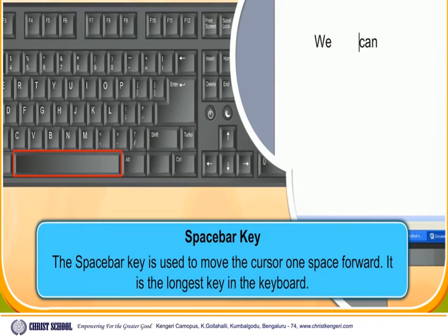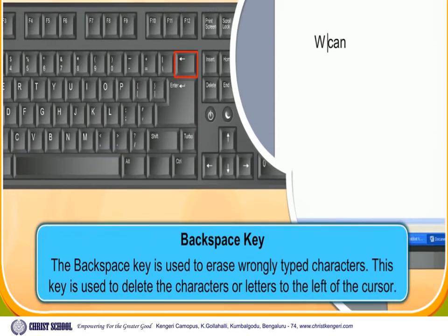Can you see the space between two words? Backspace key: the Backspace key is used to erase wrongly typed characters. It deletes the characters or letters to the left of the cursor. The key has deleted the letter E.